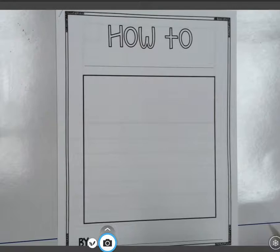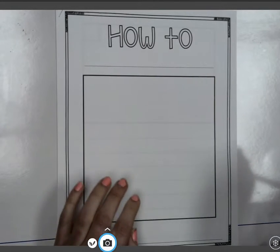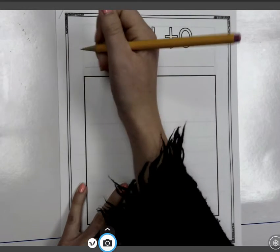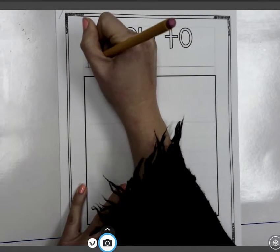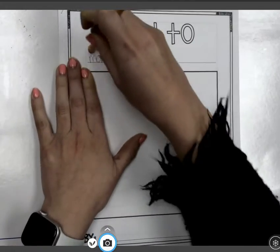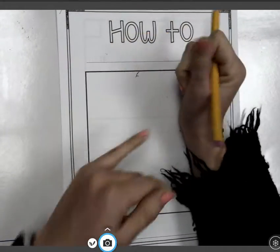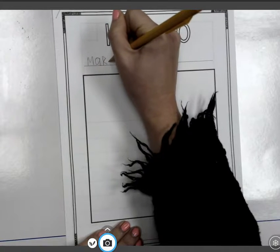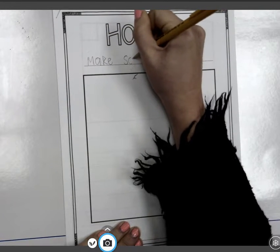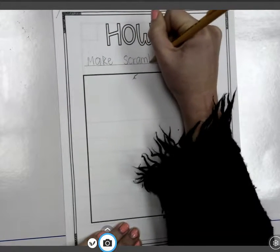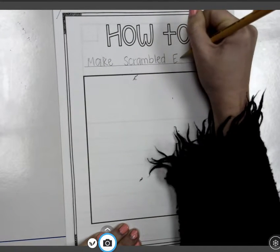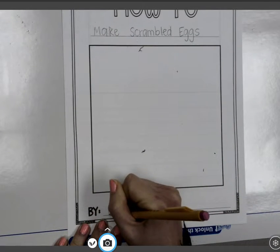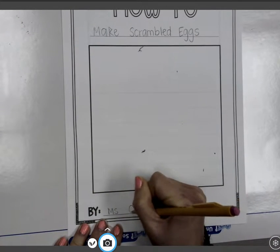So you are going to have this booklet, and you are going to add what you know how to do. So I said how to make scrambled eggs, so I'm going to do how to make—well, this should all be capitalized because it is a title. So make scrambled eggs. And then you'll put your name on it and tell us who it is by.